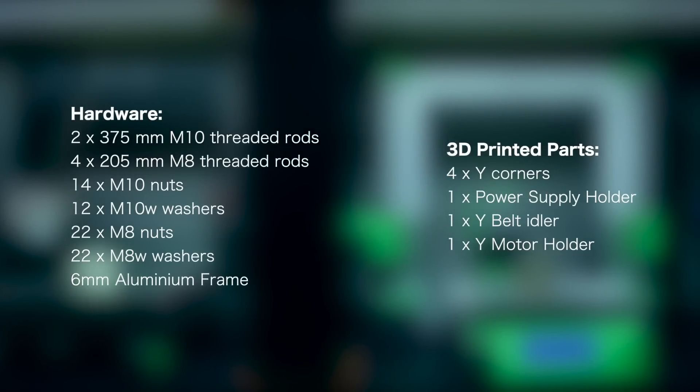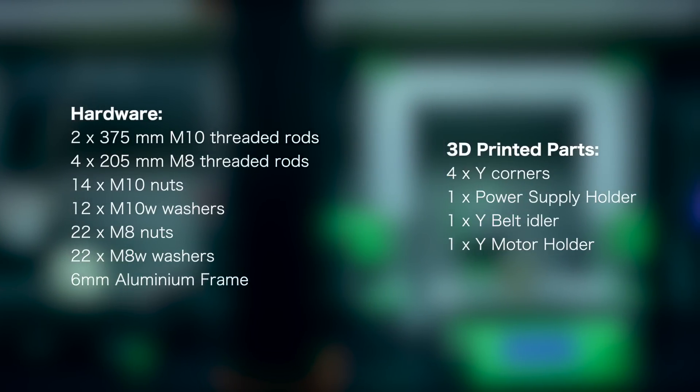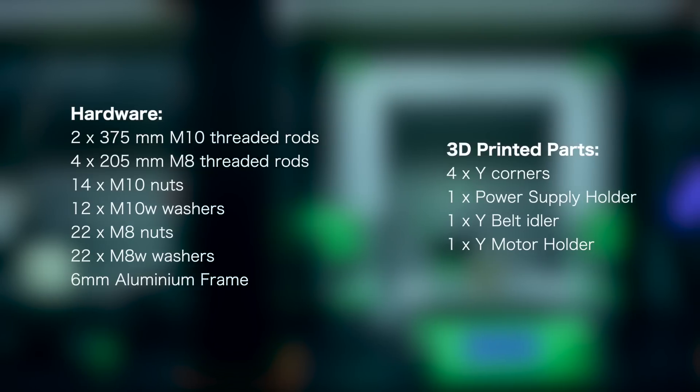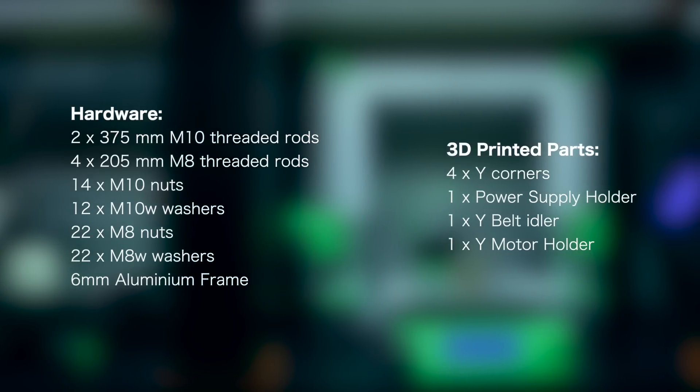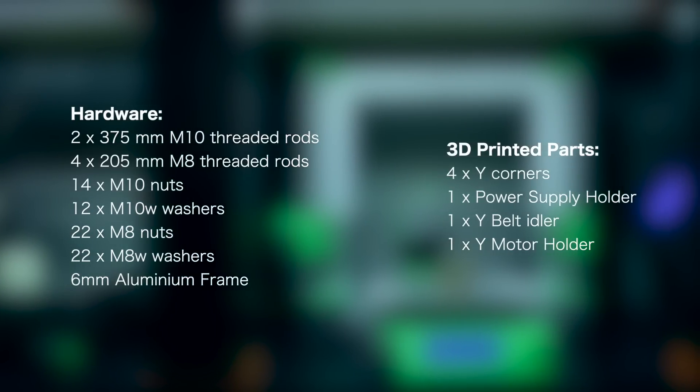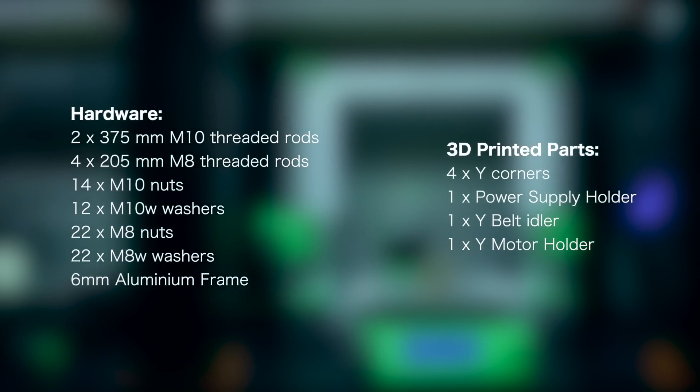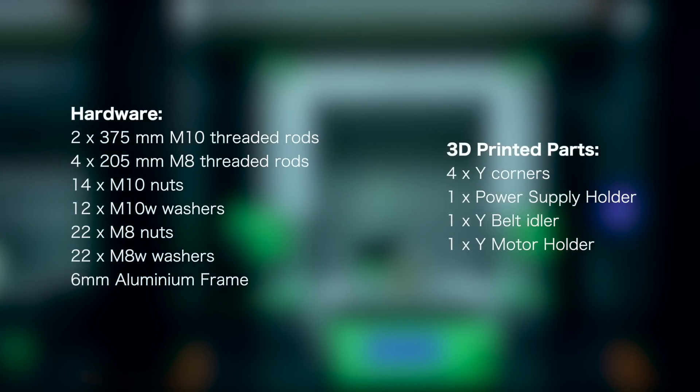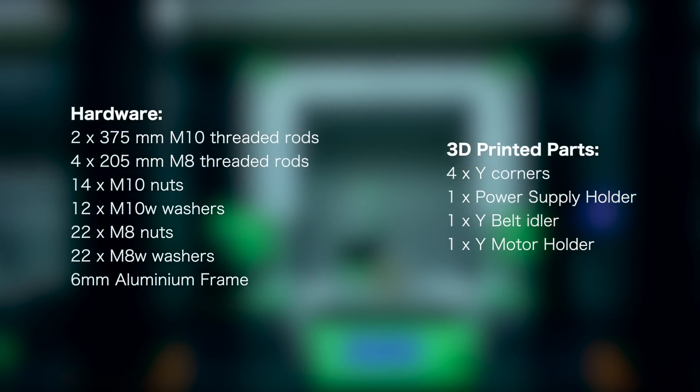Now we're going to make a recap for all the components we used to build this part of the printer. For hardware, we used two 375 mm M10 threaded rods, four 205 mm M8 threaded rods, 14 M10 nuts, 12 M10 washers, 22 M8 nuts, 22 M8 washers, and the 6 mm aluminum frame.